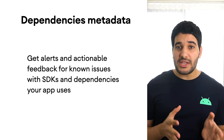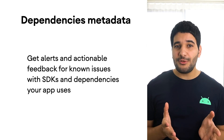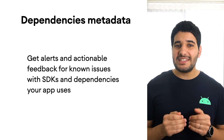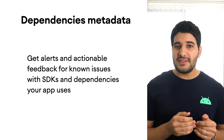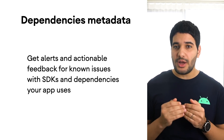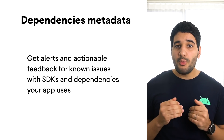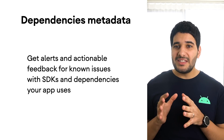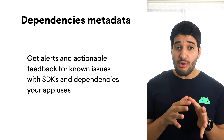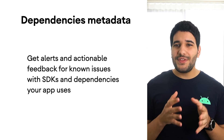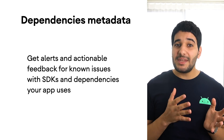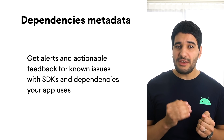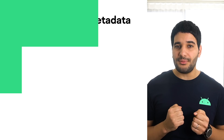When building your app using Android Gradle Plugin 4.0 and higher, the plugin includes metadata that describes the dependencies compiled into your application. When uploading your application, the Play Console inspects this metadata to warn you about known issues with SDKs and dependencies your app uses, and will provide actionable feedback to resolve those issues for you.